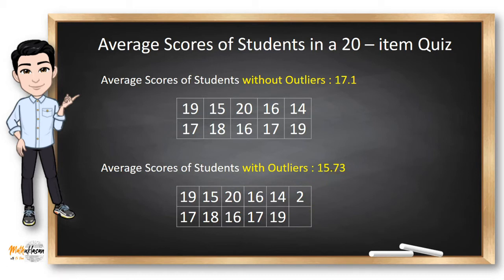But we cannot just remove the score of 2 in the data set because some students get low scores like this. That is why outliers are problematic for many statistical analysis because they can cause tests to either miss significant findings or distort real results. There are some guidelines and techniques that we could use to identify outliers like scatterplot diagrams and quartiles.